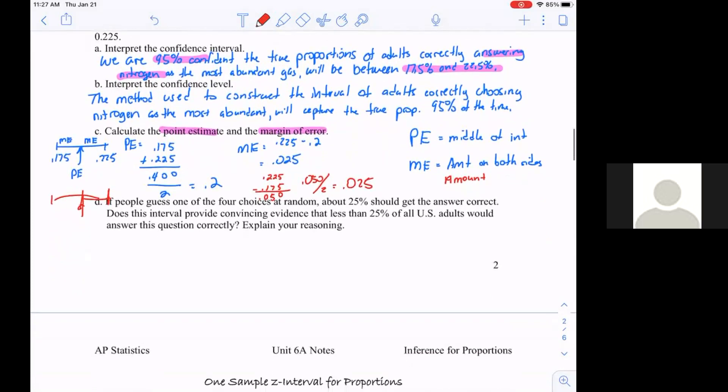Here's the principle of how we're going to start using a confidence interval. If people just guessed one of four choices at random, about 25 percent should get the answer correct. Does this interval provide convincing evidence that less than 25 percent of all U.S. adults would answer correctly? Given that I can guess and get it right 25 percent of the time, but my interval is 17.5 to 22.5, is this convincing evidence? Our answer is going to be yes, because the entire interval is below 25 percent.